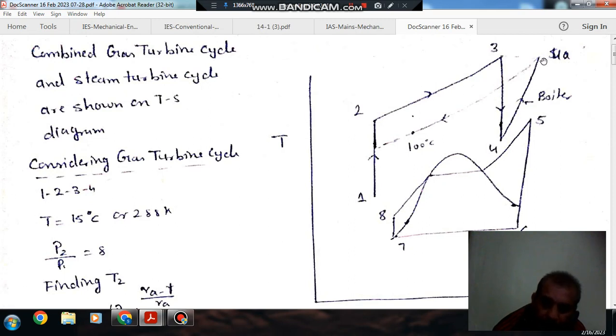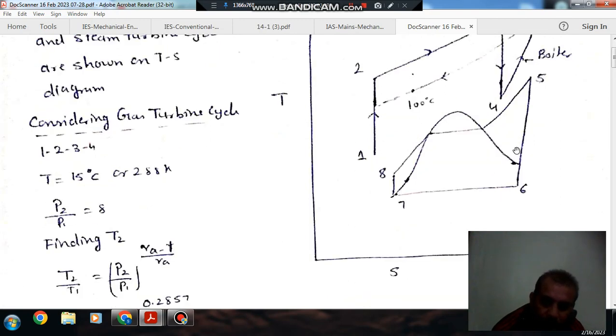And after 4 the gas has been heated to 4A to supply before supplying to the steam. And then this 5-6-7-8 is your steam cycle.